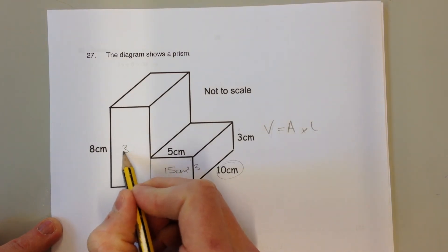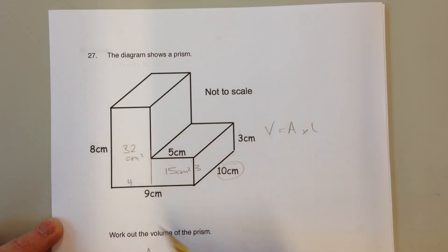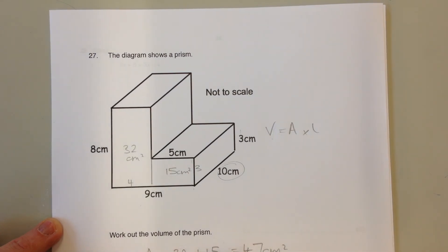8 times 4 is 32 centimeters squared. So the area of the L-shape is 47 centimeters squared.